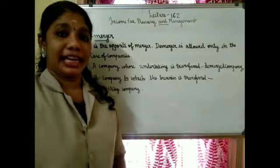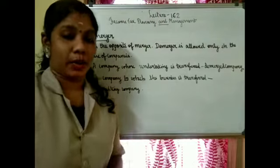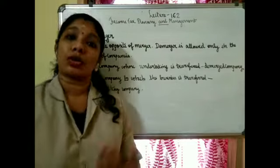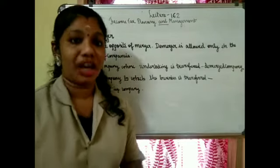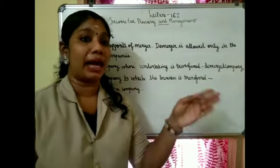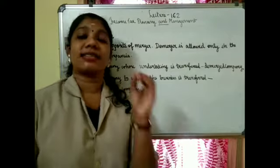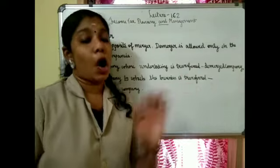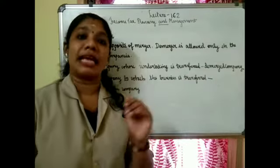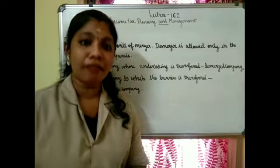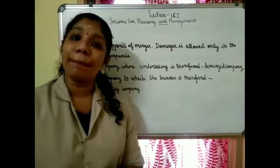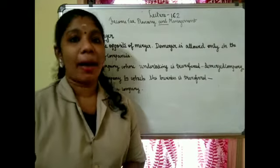After the demerger, all the assets of the demerged company become the assets of the resulting company, and all the liabilities of the demerged company become the liabilities of the resulting company. That is the base point of demerger, similar to what we see in amalgamation.